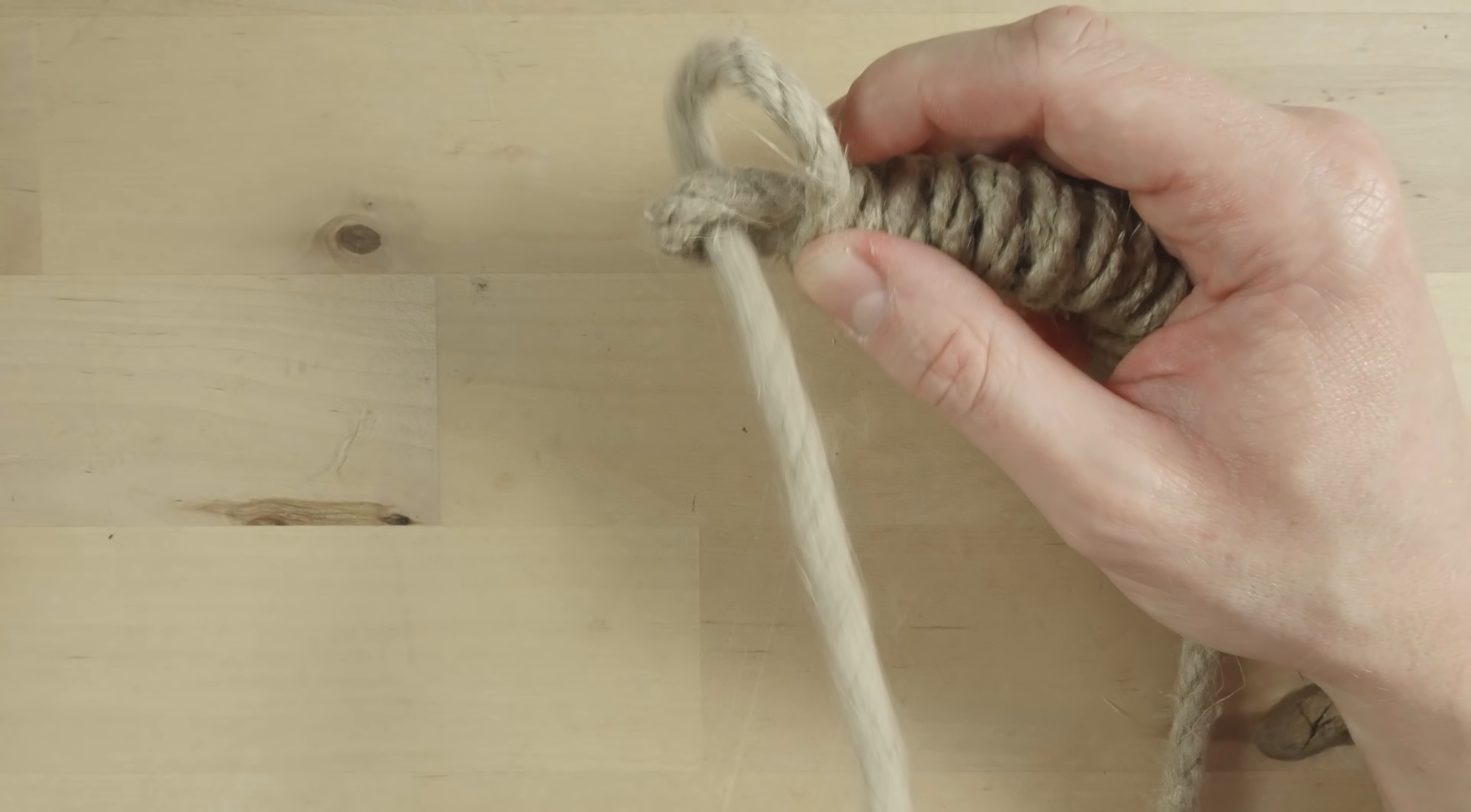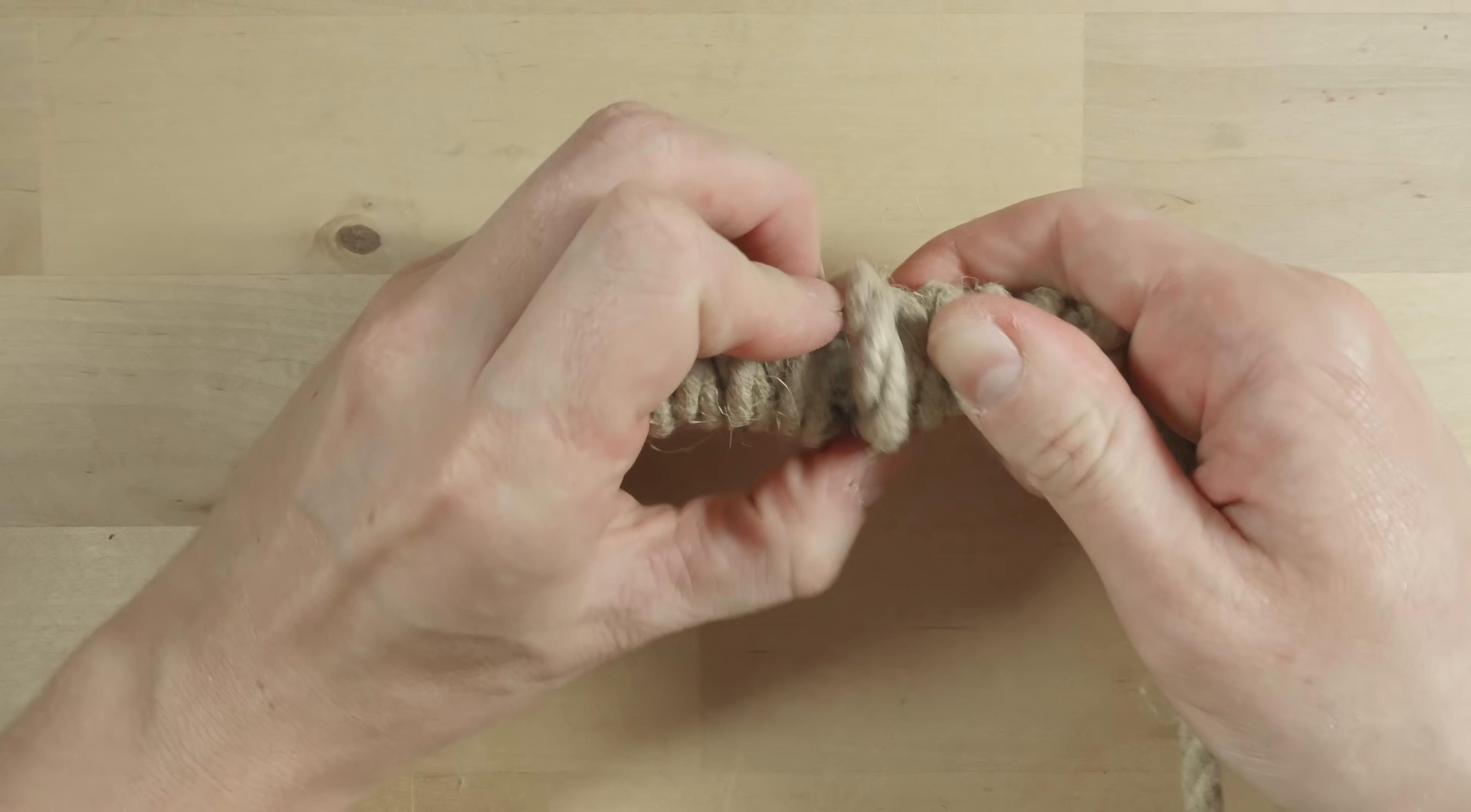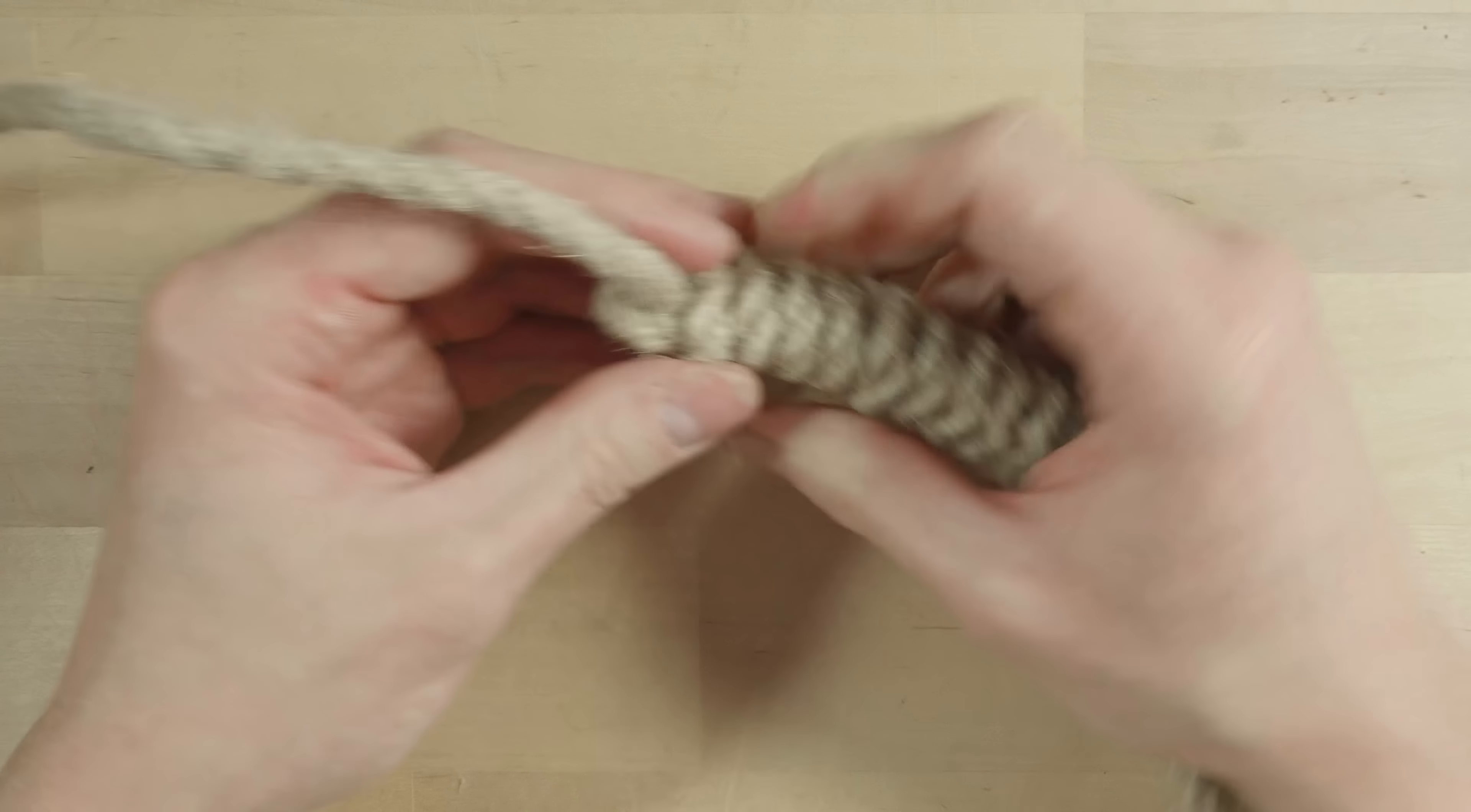If you want to make it a bit nicer, run through the wrapping turns and remove any slack. Then pull the slack into your working end.